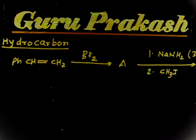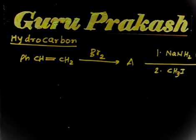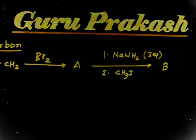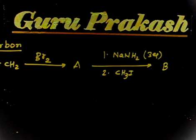We have an alkene — Ph-CH=CH2 — reacting with bromine, and this gives compound A. Further, A is reacted with 3 moles of NaNH2 in the first step, and in the second step it is reacted with CH3I, giving product B. You have to identify the structure of A and B.